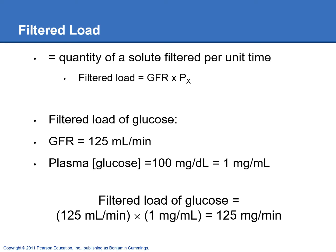Filtered load is a way to figure out how much of a solute is filtered per minute. For example, if plasma glucose concentration is 1 mg/mL and you multiply by the GFR, you're filtering 125 mg of glucose per minute. You can change how much glucose ends up in urine by changing the GFR or changing blood glucose levels. In diabetics with blood glucose at 300 mg/dL — about 3 mg/mL — a lot more glucose is filtered, and we can't reabsorb all of it, resulting in glucosuria.